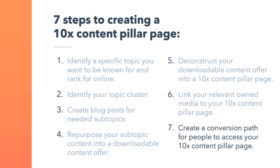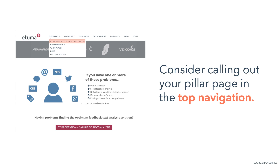Step 7: create a conversion path for people to access your 10x content pillar page. The goal is to let people know this content is available — if you don't, you risk a large portion of your website visitors never finding it. Forgetting this step would be like building a new room on your house without a door. Consider calling out your pillar page in the top navigation through a one or two click process: one click if offered directly in the dropdown menu, two clicks if you have a resources page with multiple assets.